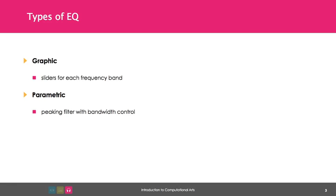The two most common are a graphic EQ, which has sliders for each frequency band, and parametric EQ, which has at least one peaking filter with bandwidth control.